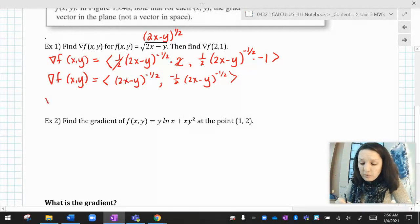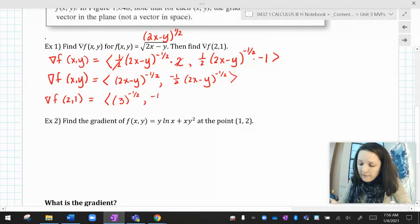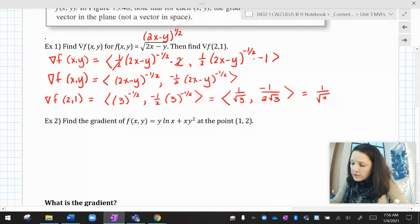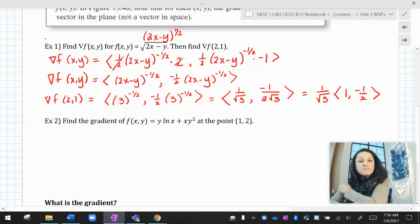Then we're supposed to evaluate that at the point 2, 1. So now I'm going to plug 2 in for x and 1 in for y, so that's going to be 3 to the negative 1/2, and negative 1/2, 3 to the negative 1/2, and that just looks ugly. So I'm going to write it as 1 over radical 3, comma negative 1 over 2 radical 3. Or if I wanted to even do more than that, I could pull out this guy and do that. Any of those are fine. I don't care which one you pick.